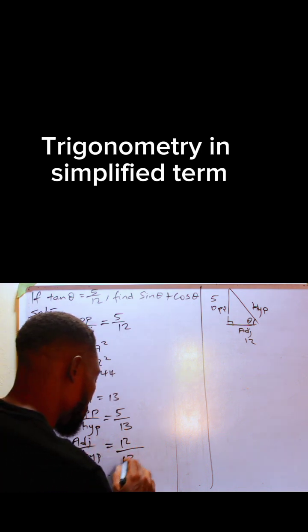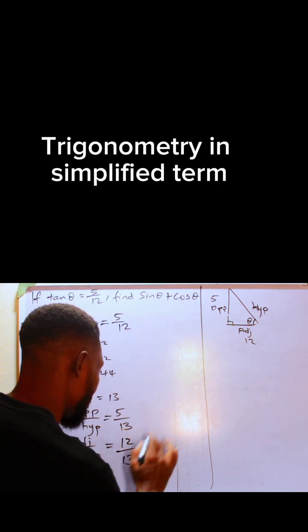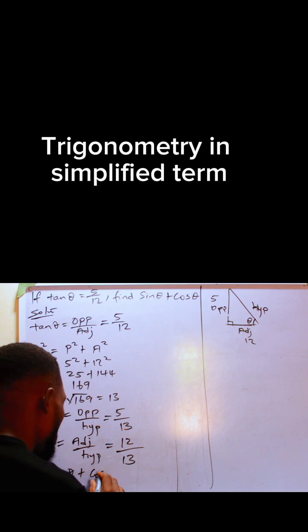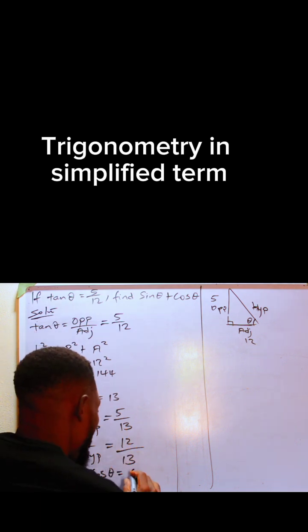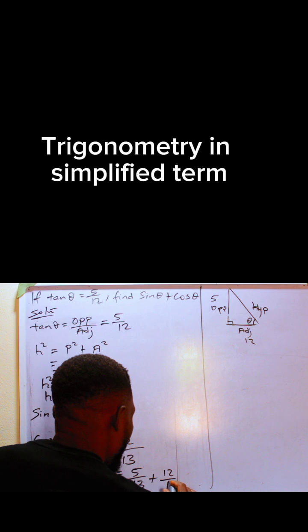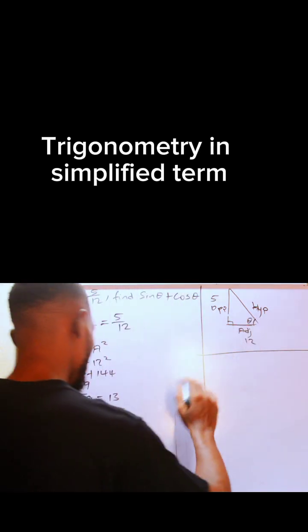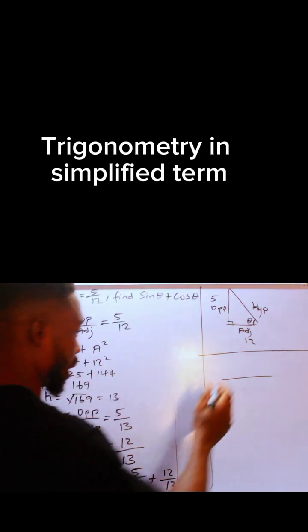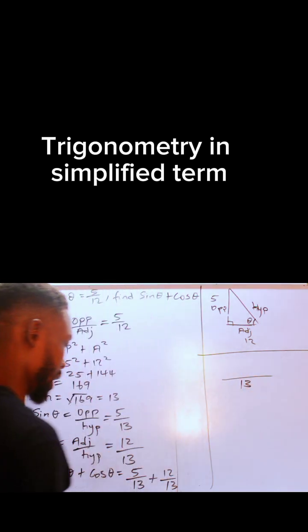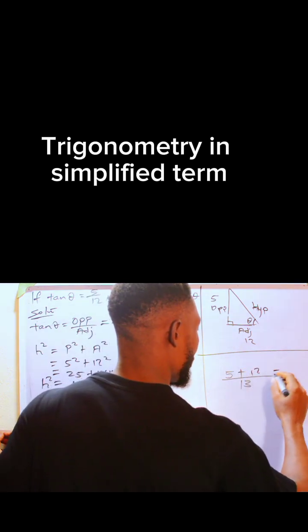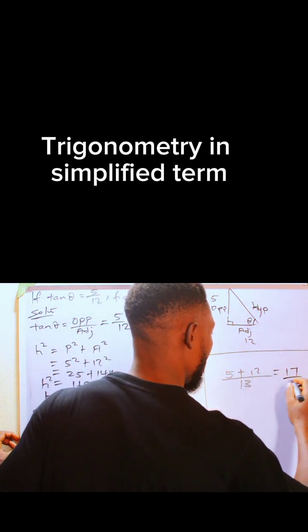Therefore, sin θ plus cos θ becomes 5 over 13 plus 12 over 13. Adding fractions with common denominator 13, we add the numerators: 5 plus 12 gives us 17 over 13.